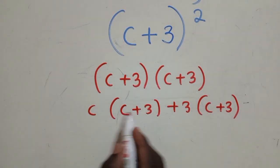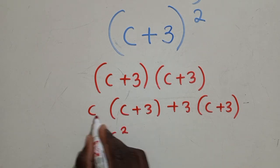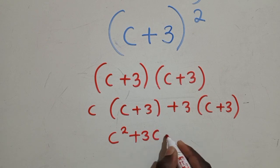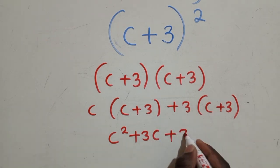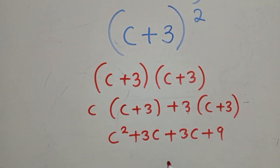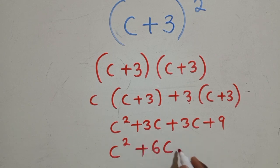So when we multiply here, get rid of the brackets. C and C will give us C squared. C by 3 will give us 3C, plus here we'll get 3C, right here we'll get 9. So work out common terms. So here we have C squared plus 6C plus 9. And this is our solution right here.